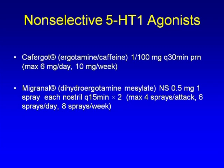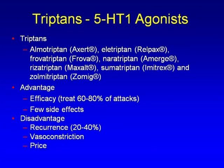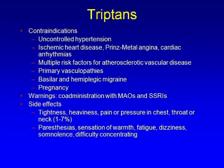Triptans are the most effective medications for migraines. There are nine triptans available in the U.S. They are very efficient with few side effects compared to ergotamines and DHE. Unfortunately they cannot be prescribed to patients with heart disease due to vasoconstriction, and there is a recurrence rate of 20 to 40%. Key contraindications include uncontrolled hypertension, ischemic heart disease, vasculopathies, and pregnancy.